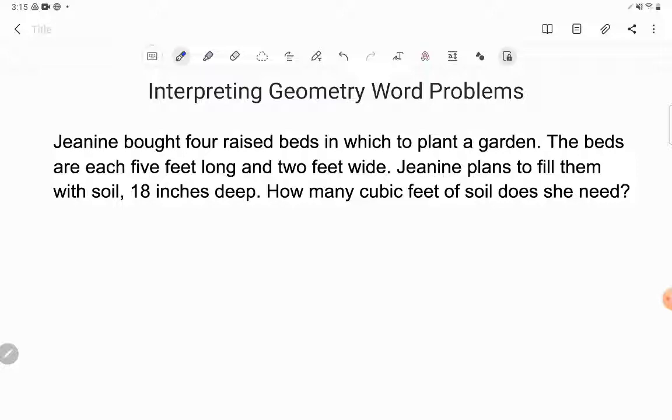So let's go ahead and do it together because the GED loves to try to trick us as many times as this sucker does. Let's read it first. Janine bought four raised beds in which to plant a garden. The beds are each five feet long and two feet wide and she's going to fill them with soil 18 inches deep. Notice those three dimensions: five feet long, two feet wide, 18 inches deep.